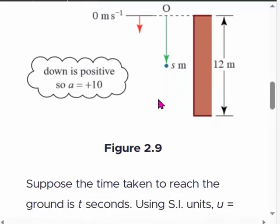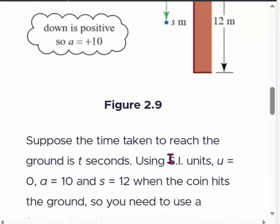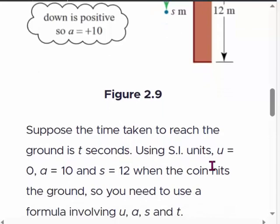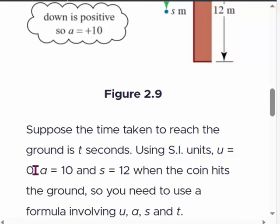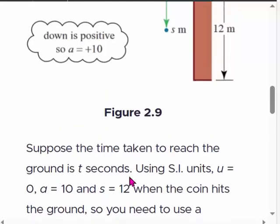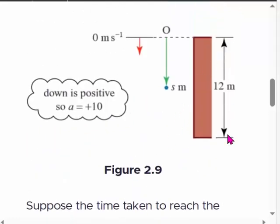Suppose the time taken to reach the ground is t seconds. Using SI units, u (initial velocity) is zero, acceleration downward a equals plus 10, and s equals 12. s is the distance traveled from top to bottom, 12 meters, and we assume this is the initial condition, meaning s₀ (initial displacement) is 0.